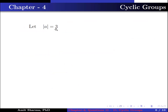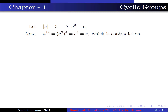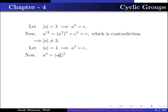Let order of A be 3, this implies A cubed equals identity. Then A to the power 12 equals (A cubed) to the power 4 equals e to the power 4 equals identity, which is a contradiction since A to the power 12 is not equal to identity. So order of A is not 3. Let order of A be 4, this implies A to the power 4 equals identity. Then A to the power 8 equals (A to the power 4) squared equals e squared equals identity, which is a contradiction. So order of A is not 4.